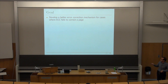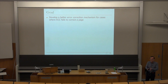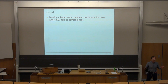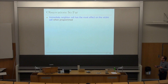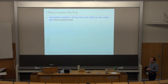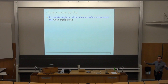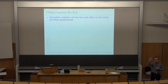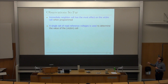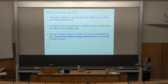Our goal was to develop a better error correction mechanism for cases where error correcting codes fail to correct a page. If ECC fails, can you be more intelligent? Our observation is that the immediate neighbor cell has the most effect on the victim cell when programmed. We use a single set of re-reference voltages determined based on the overall threshold voltage distribution of all cells.